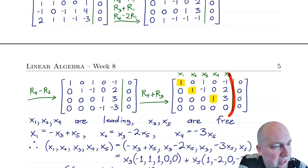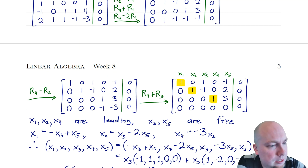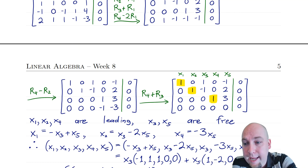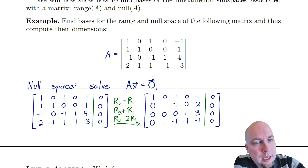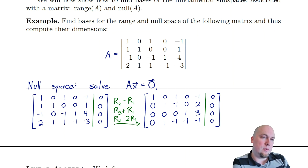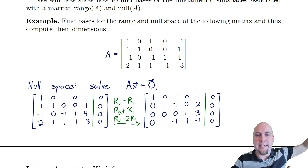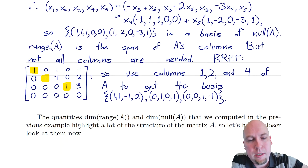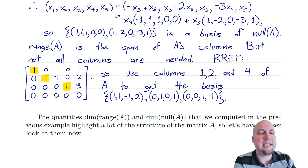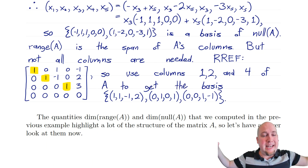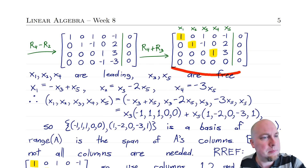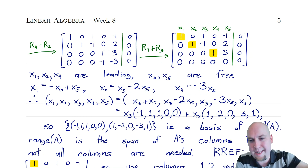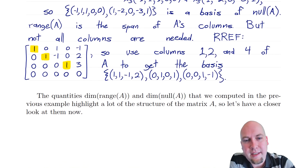Similarly, the fifth column in the RREF is minus the first column, plus two times the second column, plus three times the fourth column. The exact same relationship holds in the original matrix A — the fifth column is −1 times column one, plus 2 times column two, plus 3 times column four. So the fifth column is not required in a basis either; it doesn't contribute anything to the span. The three leading columns from the original matrix are linearly independent and span the range — this is confirmed by a theorem in the textbook.